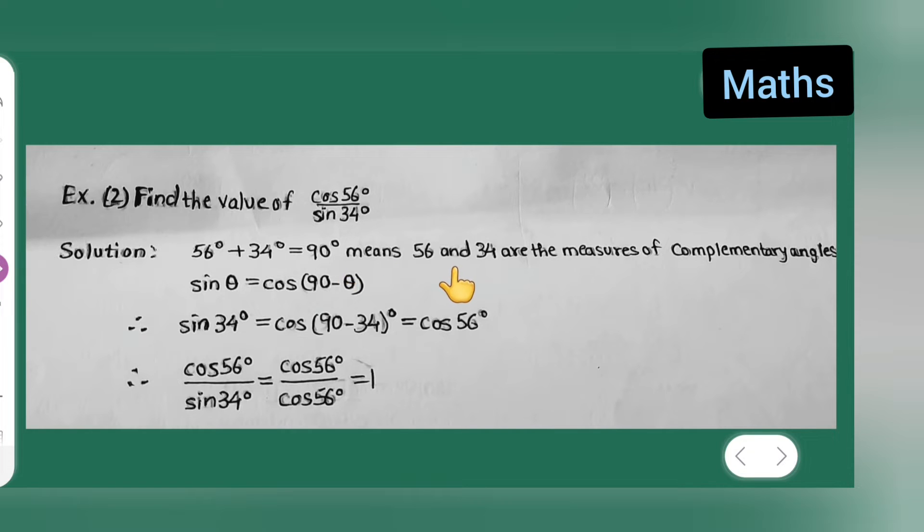This means 56 and 34 are the measures of complementary angles. Then you all need to know this formula: sin theta is equal to cos of 90 minus theta. First, you all take down this.